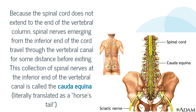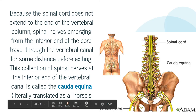Because the spinal cord does not extend to the end of the vertebral column, spinal nerves emerging from the inferior end travel through the vertebral canal for some distance before exiting. This collection of spinal nerves at the inferior end of the vertebral canal is called the cauda equina, which translates to 'horse's tail.' The spinal cord only goes to about the first lumbar vertebra, and the rest are just descending nerves — it's supposed to look like a horse's tail.